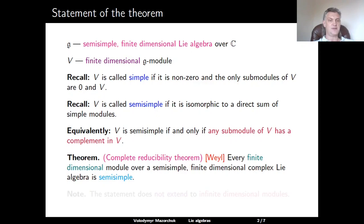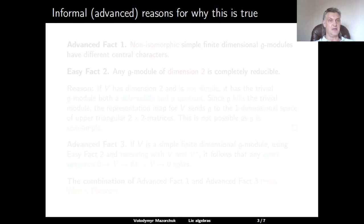So now we can formulate the theorem — the complete reducibility theorem due to Weyl. Every finite-dimensional module over a semi-simple finite-dimensional complex Lie algebra is semi-simple. We note that the statement of this theorem does not extend to infinite-dimensional modules.